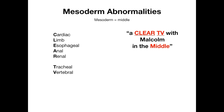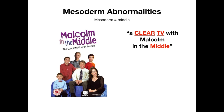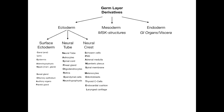So: Cardiac, Limb, Esophageal, Anal, Renal, Tracheal, and Vertebral — that's CLEAR TV. This is the summary slide. The high-yield takeaway is to know the derivatives of each germ layer, especially those within the ectoderm, and to know what happens if the mesoderm does not form appropriately. That's your germ layer derivatives.